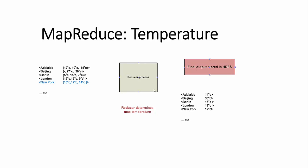The reducer process takes the key-value pair, which is the city followed by the list of temperatures, and picks out the maximum temperature for that city. The output is then stored in HDFS.